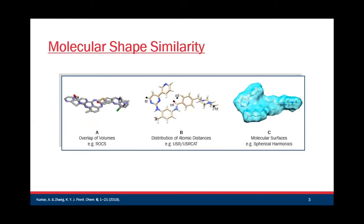One approach that's gained popularity recently is comparison based on molecular shape. The shape of a molecule is a good predictor of whether it's likely to display activity for a protein target, as it needs to be the right size and shape to fit into the binding pocket. There's currently no absolute definition of 3D shape; instead we depend on mathematical approximations to condense the shape down to a vector of numbers we can compare. There are currently three main categories: overlap of volume between two molecules, distribution of atomic distances from fixed reference points, and use of the molecule's surface.